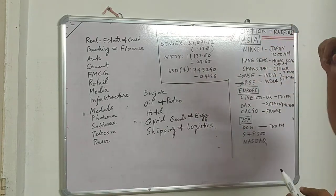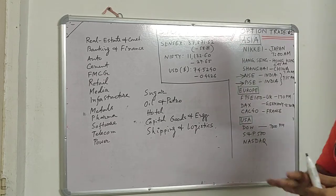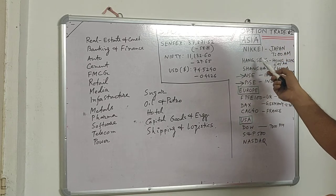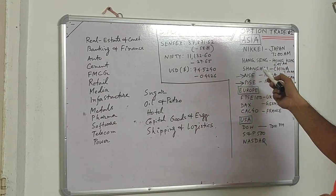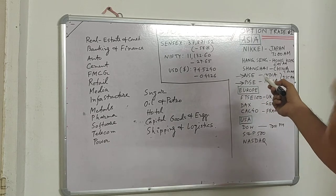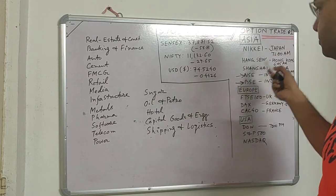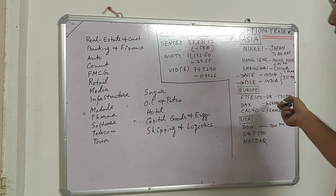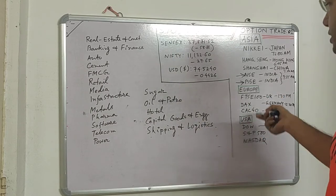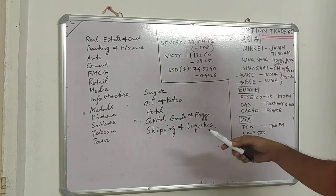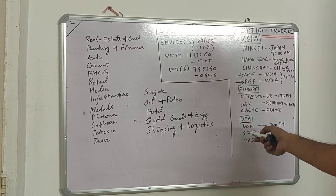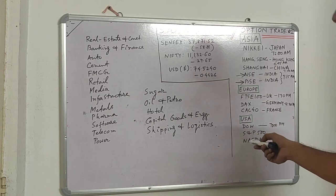For major world stock exchanges: in the USA there is Dow Jones and Nasdaq. In Asia, Nikkei is in Japan, Hang Seng is in Hong Kong, and Shanghai is in China. NSE and BSE are in India. Every country has their own exchange. In Europe, FTSE 100 is in the UK, DAX is in Germany, and CAC 40 is in France. In the US, Dow Jones, S&P 500, and Nasdaq are popular.